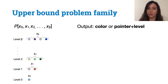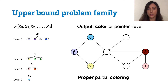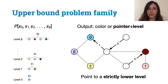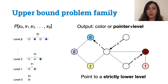Now let's see what the constraints of these problems are. Each node can either output a color or a pointer plus a level. The first constraint is that the graph induced by the colored nodes must result in a proper coloring. The second constraint regards the pointers. A node must output a pointer, that is one outgoing edge, and a level. We require that a pointer of level x reaches either a node with a pointer of level at most x-1, or a node colored with a color of level at most x-1.